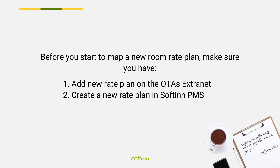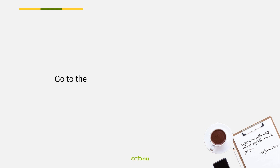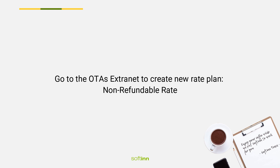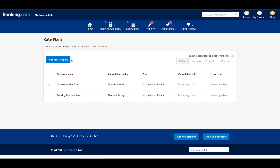Before you start to map a new room rate plan, make sure you have: one, added the new rate plan on the OTA extranet; two, created a new rate plan in Softinn PMS. Go to the OTA extranet to create a new rate plan — in this case, the non-refundable rate. You'll need to go to Booking.com extranet to add the new rate plan.